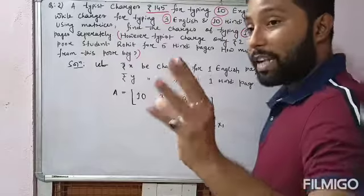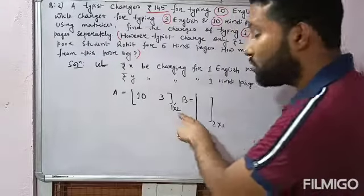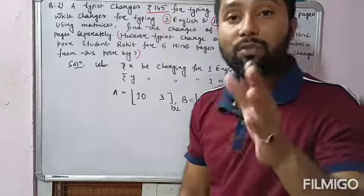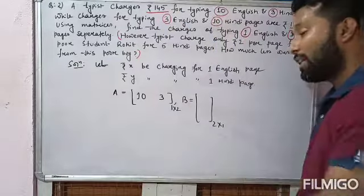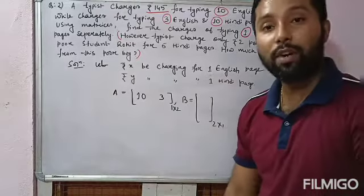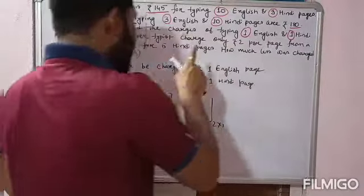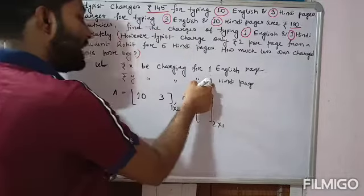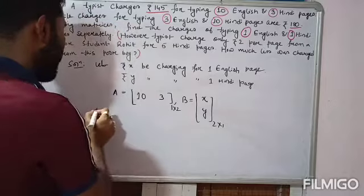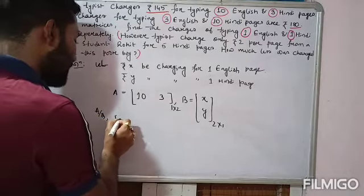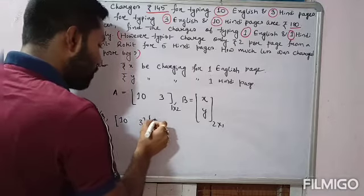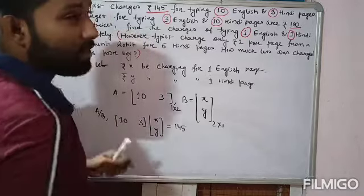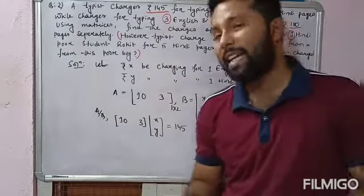It does not always mean we must multiply — sometimes addition or subtraction is also possible, it depends on the question. The second condition: for 3 English and 10 Hindi pages, the charge is rupees 180. Similarly, [3, 10] × [x; y] = 180, giving 3x + 10y = 180. This is equation number 2. So we now have two linear equations in two variables.